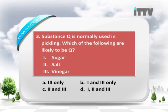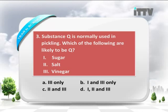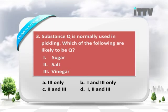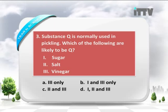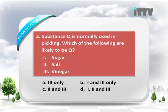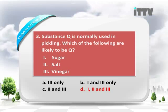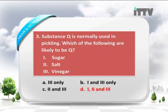Question three: Substance Q is normally used in pickling. Which of the following is likely to be Q? The options are sugar, salt, or vinegar. The answer is all three — one, two, and three. You use sugar, salt, and vinegar for pickling.